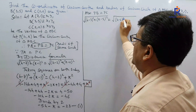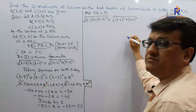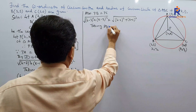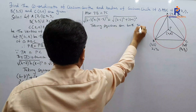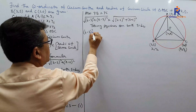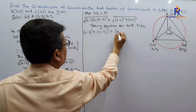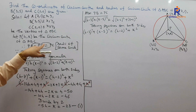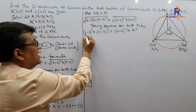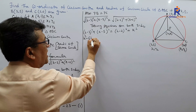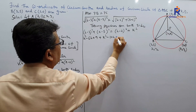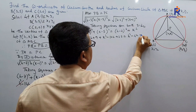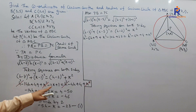Taking squares on both sides: (h−3)² + (k−5)² = (h−2)² + k². Expanding: h²−6h+9 + k²−10k+25 = h²−4h+4 + k². On the right-hand side, expanding (h−2)²: h²−4h+4, plus k².